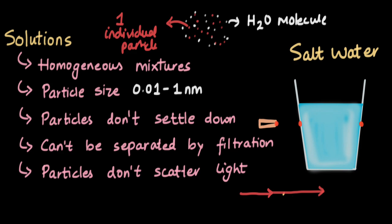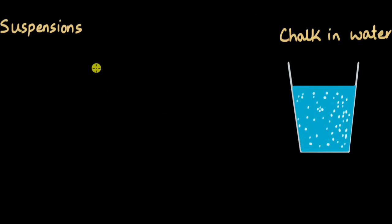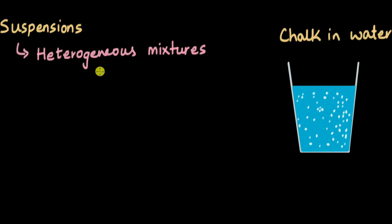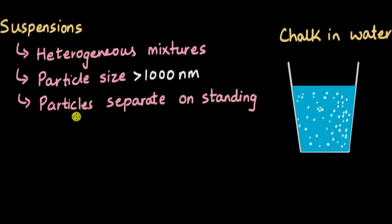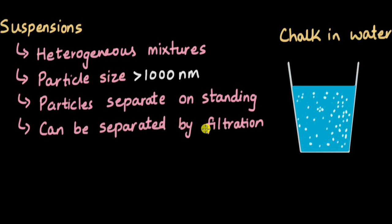Now let's move on to suspensions. For suspensions, we have the mixture of chalk and water. The first characteristic is that it is a heterogeneous mixture, meaning the particles are not uniformly distributed across the water — you can easily see them. From this property, you can say that when you let the mixture sit for some time, the chalk particles will settle down near the bottom of the glass, and you can separate them by filtration.